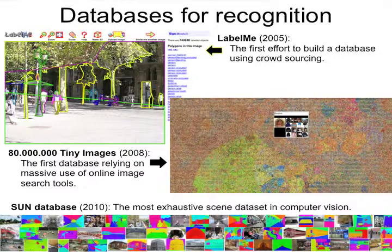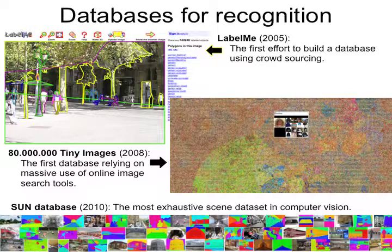One of the things that we do is try to build systems that can recognize many many different kinds of object categories. One of the things that is key to building these kinds of systems is to collect databases that provide us training data, and so one of the first things that we did — back in 2005 — was create an annotation tool that lives online.